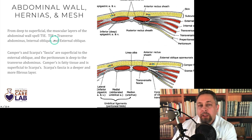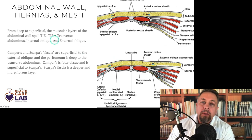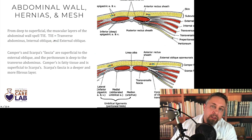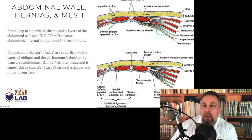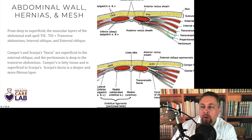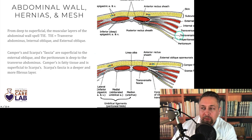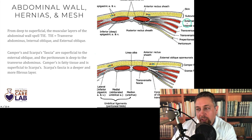From deep to superficial, one of the most important things to remember about the abdominal wall laterally — the abdominal wall spells TIE: Transverse abdominus, Internal oblique, External oblique.